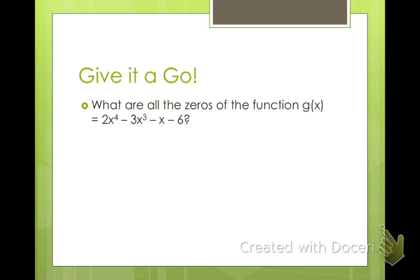All right, so let's go ahead and do this one. 2x to the 4th minus 3 cubed minus x minus 6. Go ahead and graph it and find your zeros. I'm going to do the same.